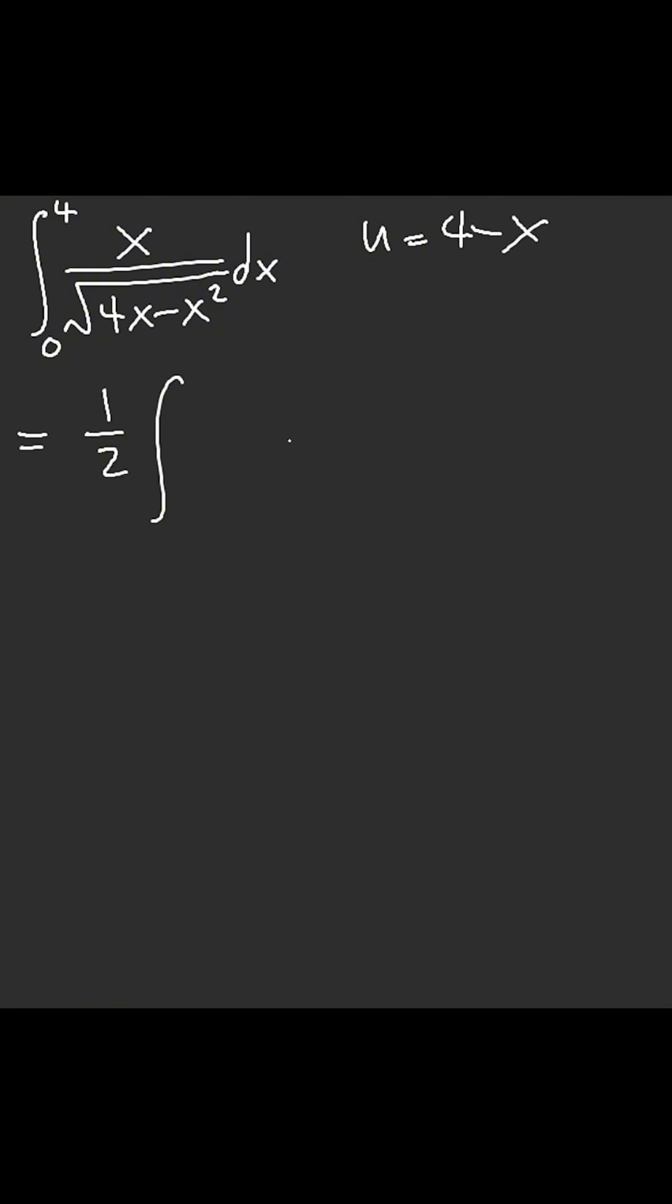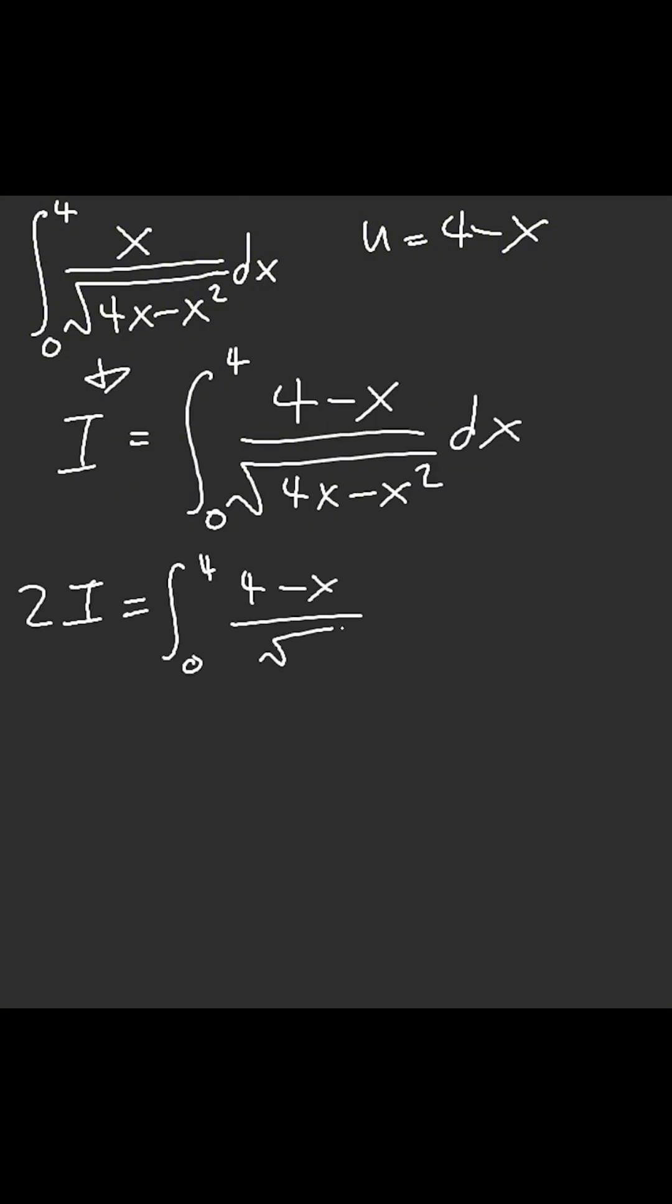This becomes, if you consider it 4, we get 4 of this. Now you're probably thinking, wait a minute, how on earth did we get here? 4 minus x of the same thing, plus x of the same thing, right? From this original I. And the x cancels out.